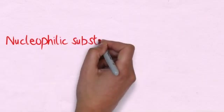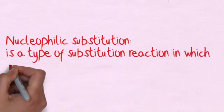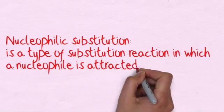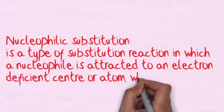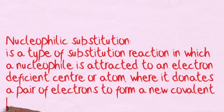Nucleophilic substitution is a type of substitution reaction in which a nucleophile is attracted to an electron-deficient centre or atom where it donates a pair of electrons to form a new covalent bond. This is a common exam question.